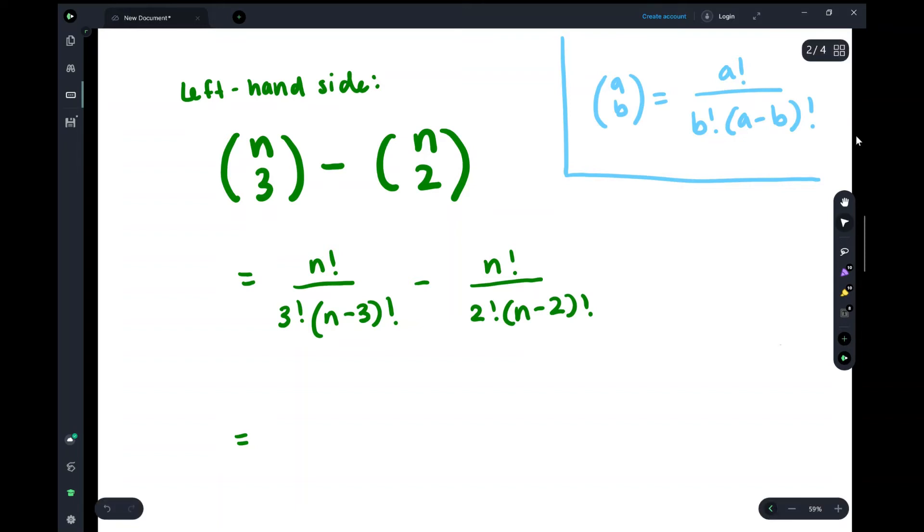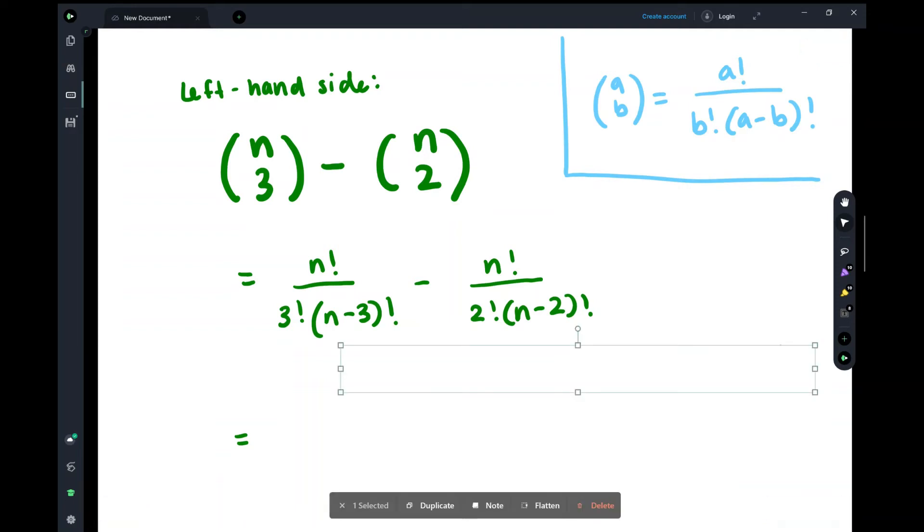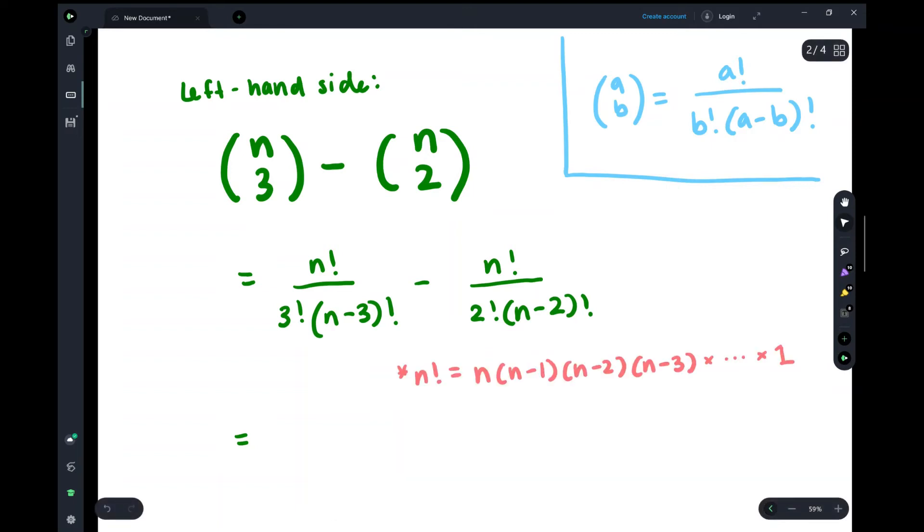So now we can further simplify this by playing with these factorials. When you have factorials in the numerator and denominator, you should always consider the fact that they might cancel, especially when you have these n terms. So thinking about what n factorial means, let's write out the actual definition: n factorial is n times (n minus 1) times (n minus 2) times (n minus 3) dot dot dot all the way to 1. Essentially, n factorial can be written as n times (n minus 1) times (n minus 2) times (n minus 3) factorial, which will help us simplify the first term.